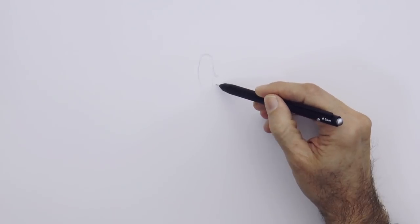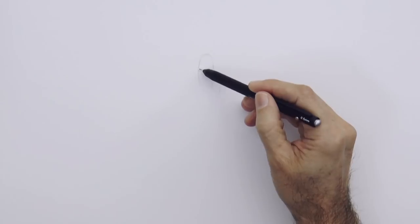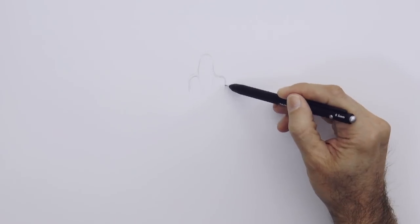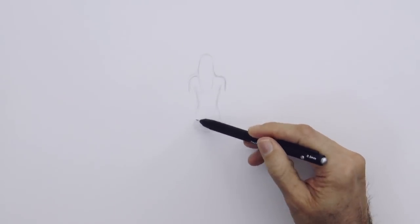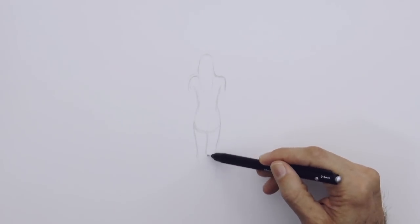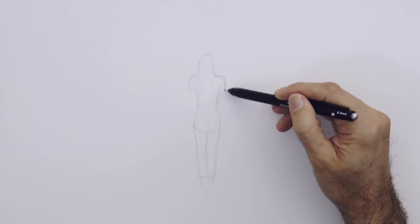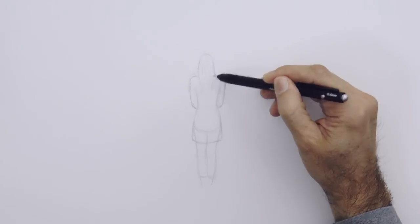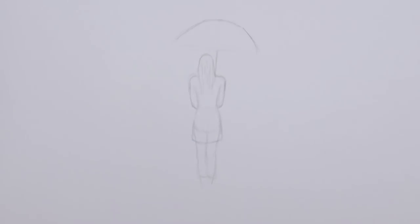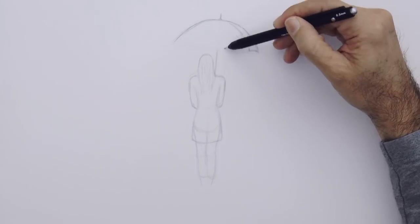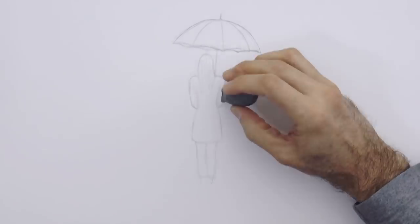We begin by sketching the head with the hair, then the shoulders and we come down through the body and the legs. We do the arms, her dress and an umbrella. I want to do a 3D effect in a very simple way. Let's see how it turns out.